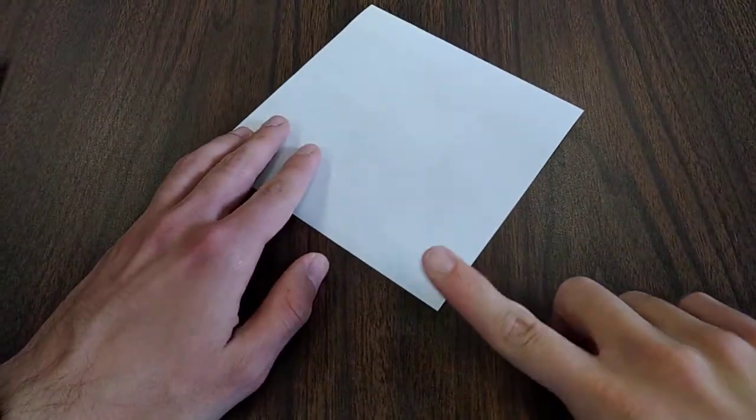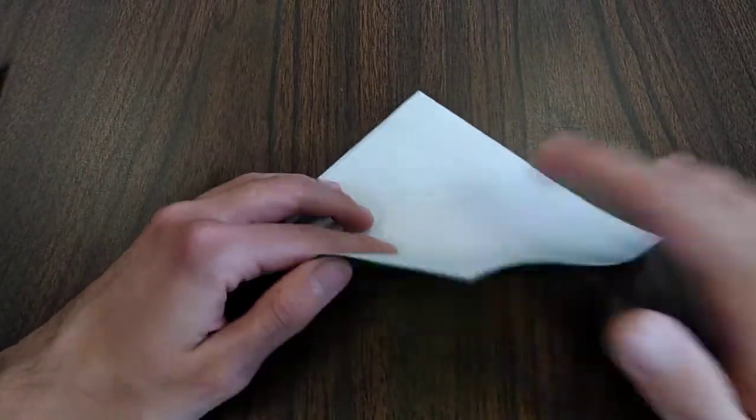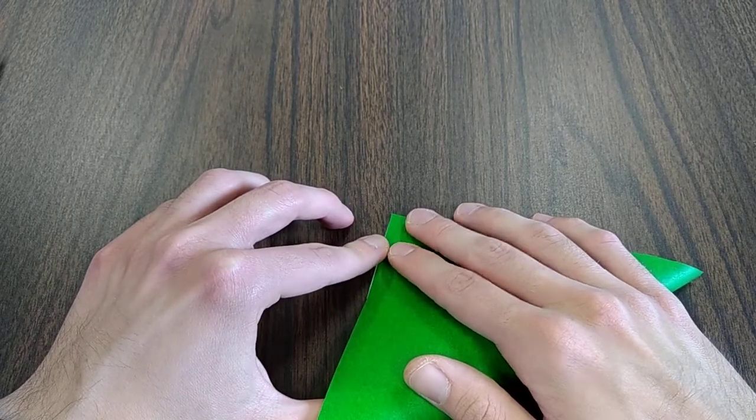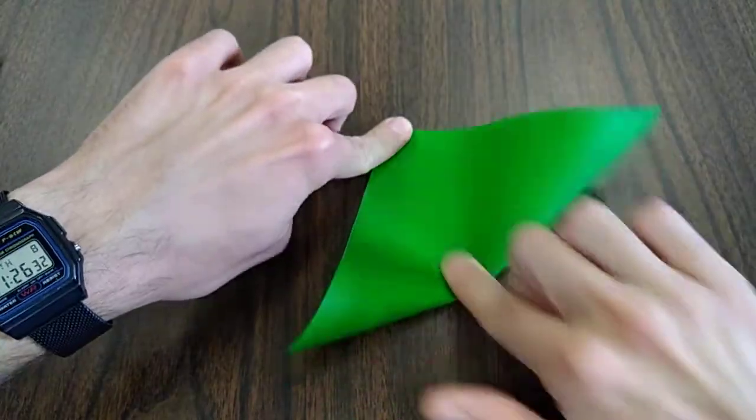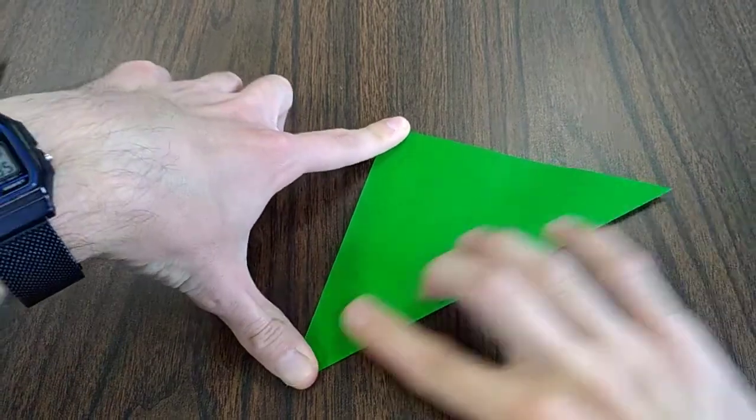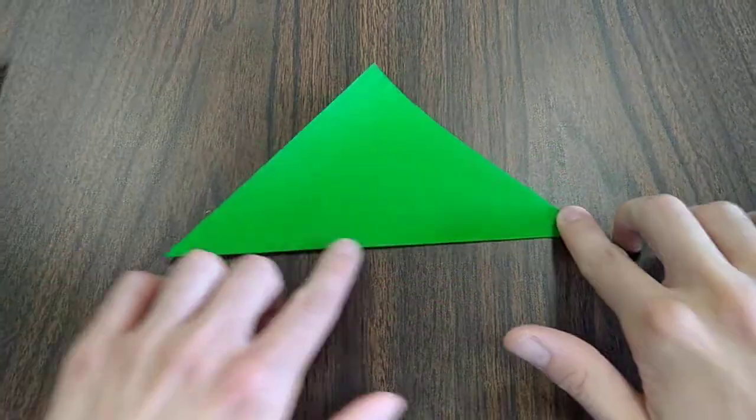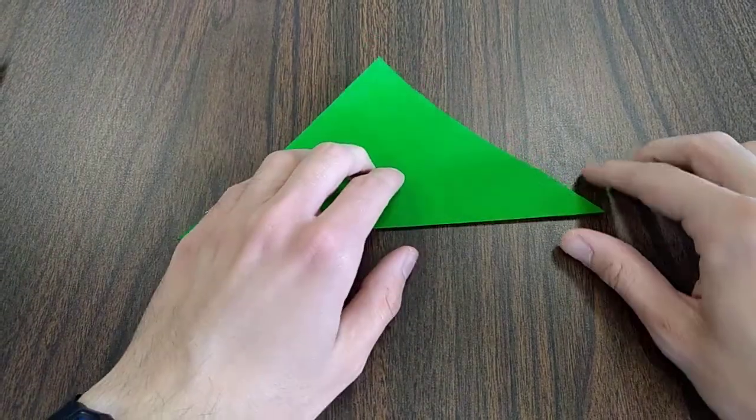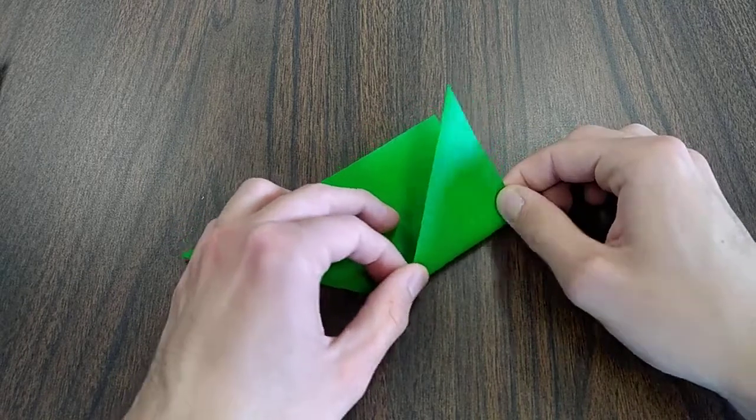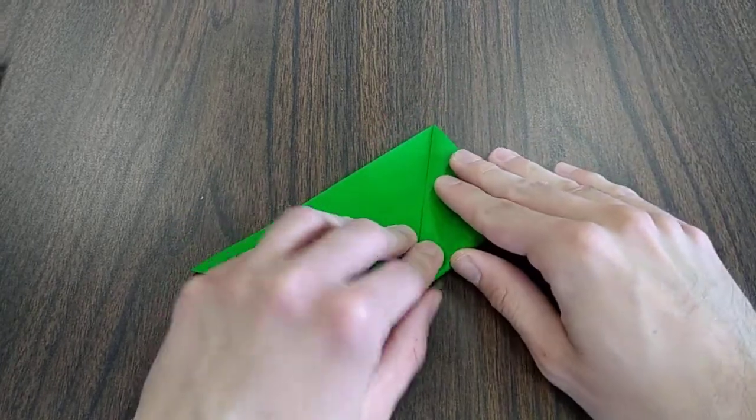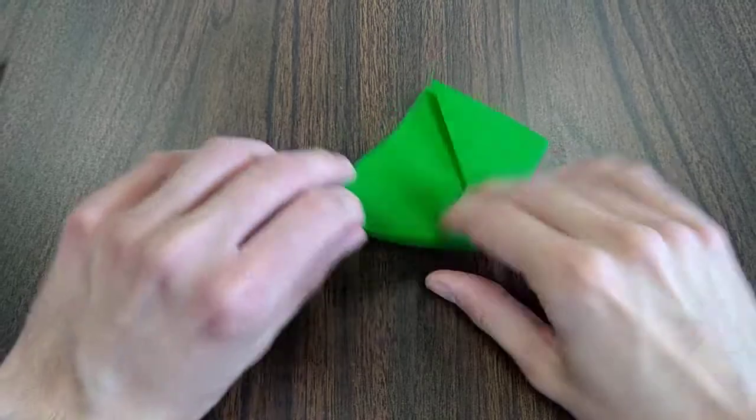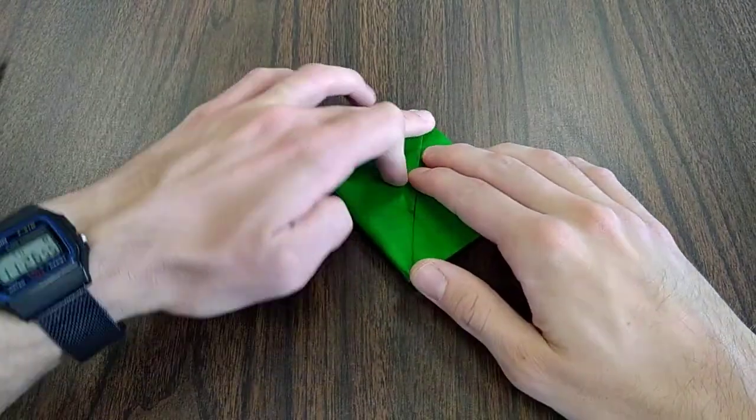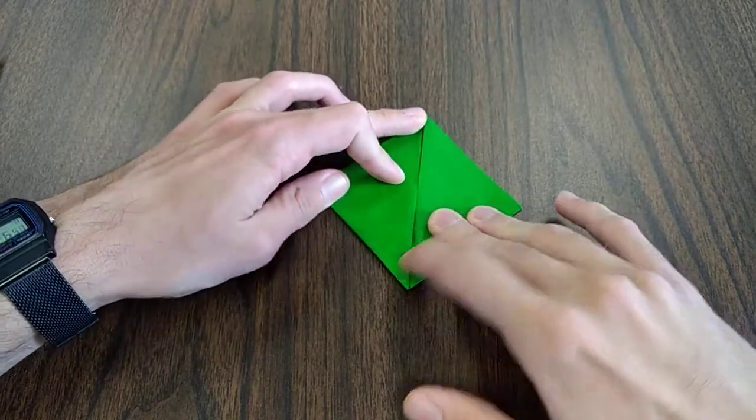Now we're going to fold so the bottom corner meets the top. Now let's fold both the right and left corners so they meet the top.